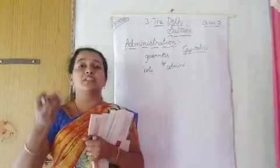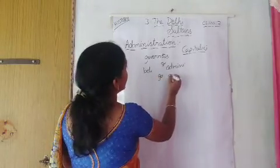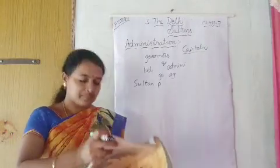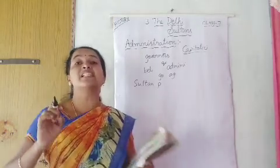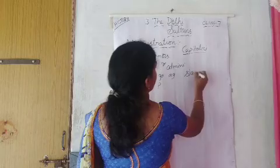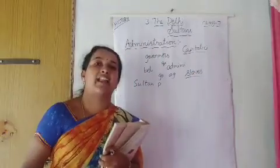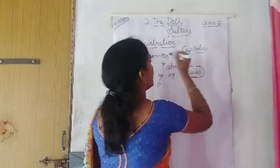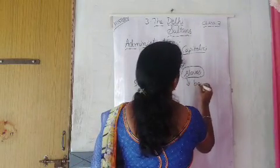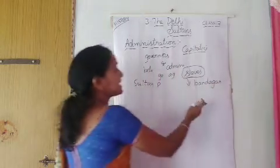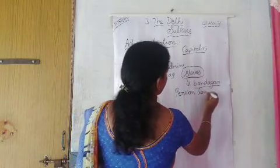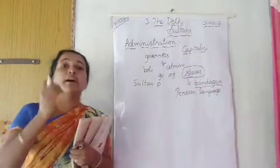Because whenever they knew the weakness of the Sultan, they would go against the kings. So Sultan Iltutmish purchased some slaves for military service. Slaves means human labour without salary. These slaves were called Bandagan in Persian language.